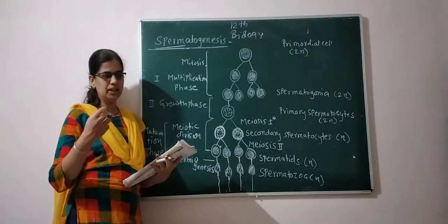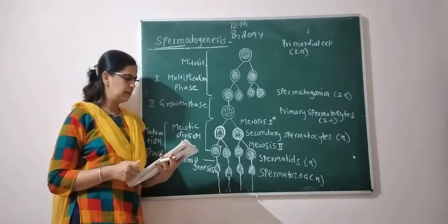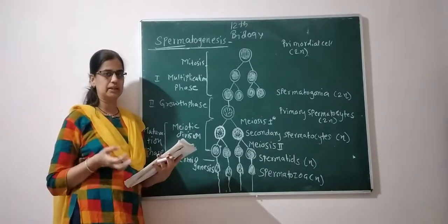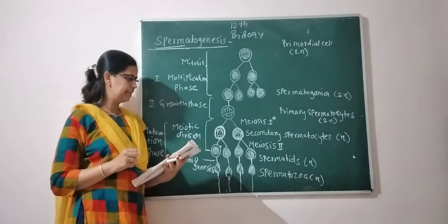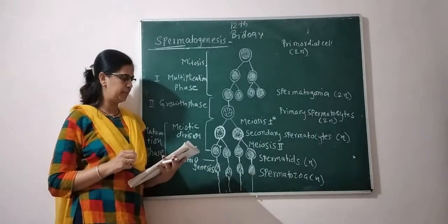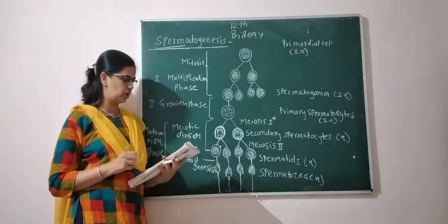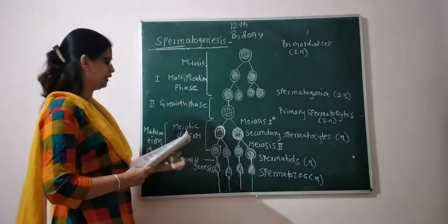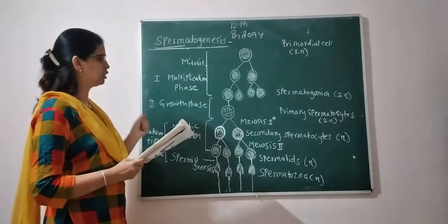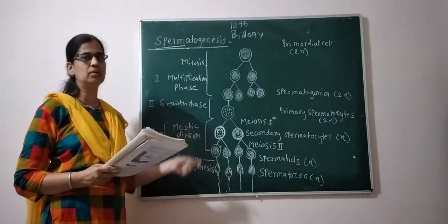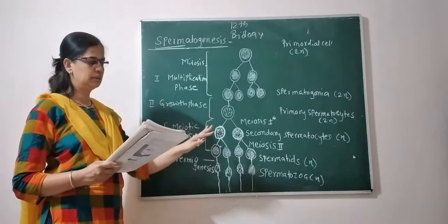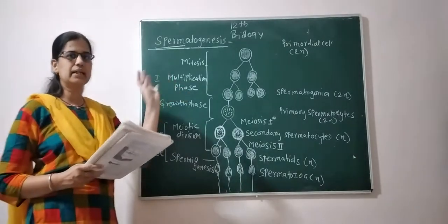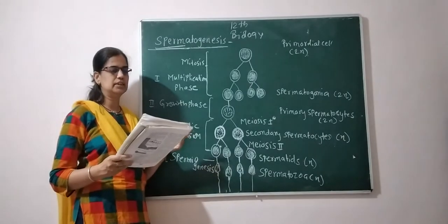The seminiferous tubules are lined by a single layer of epithelial cells called germinal epithelium. The cells of the germinal epithelium undergo spermatogenesis to produce the sperm.